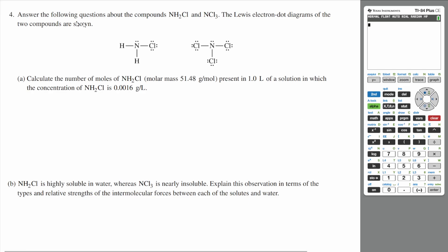All right, let's do question four. Answer the following questions about the compounds NH2Cl and NCl3. The Lewis electron dot diagrams of the two compounds are shown.